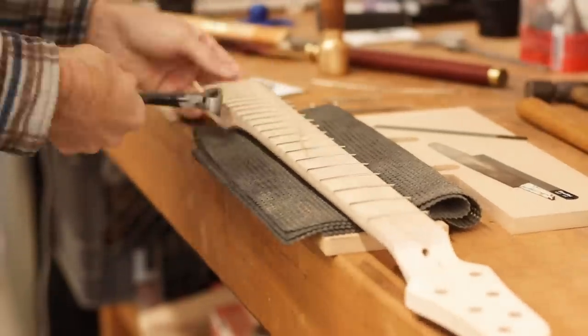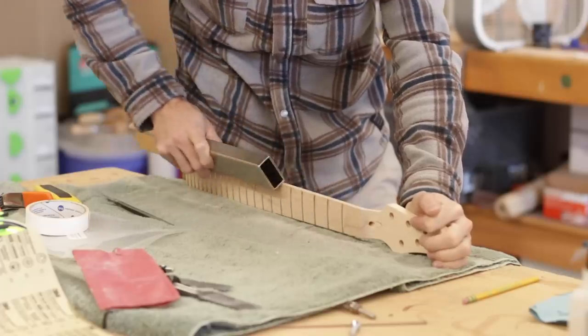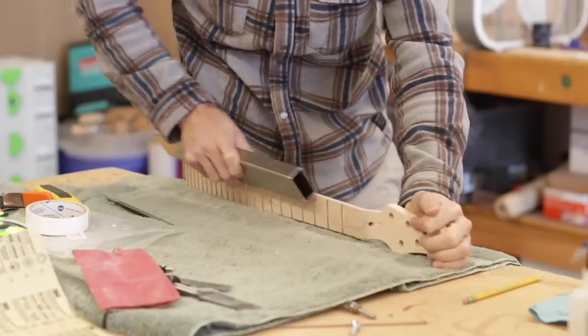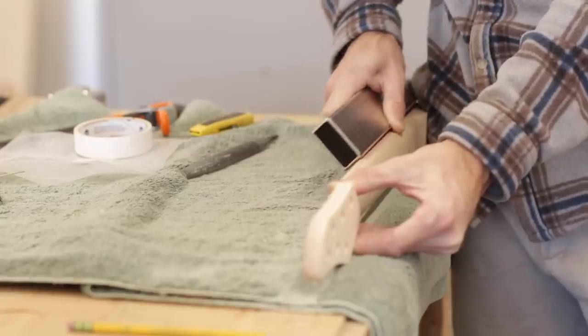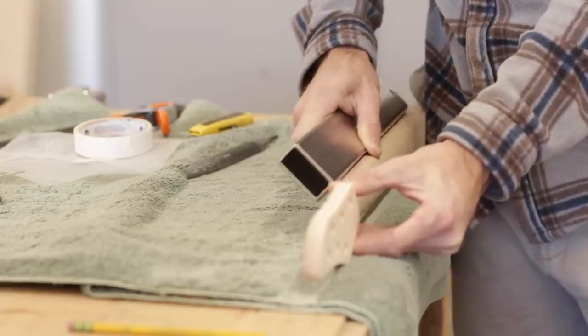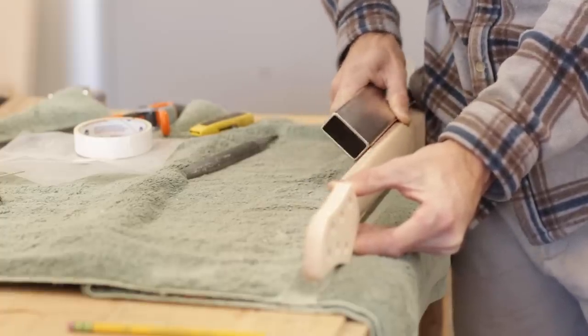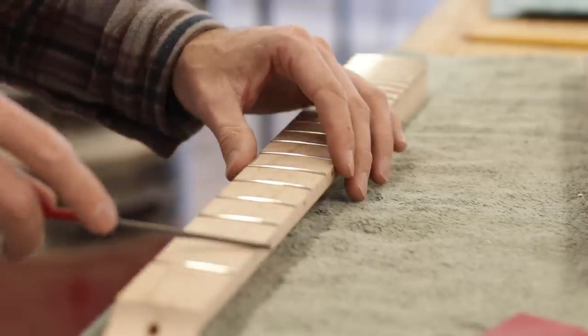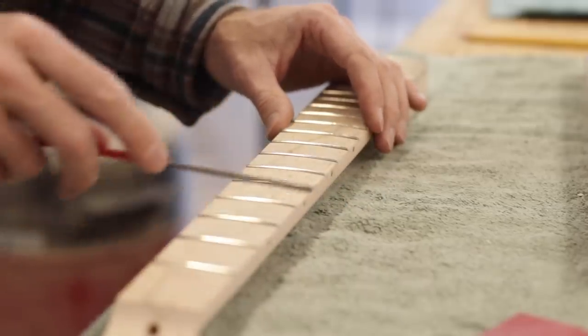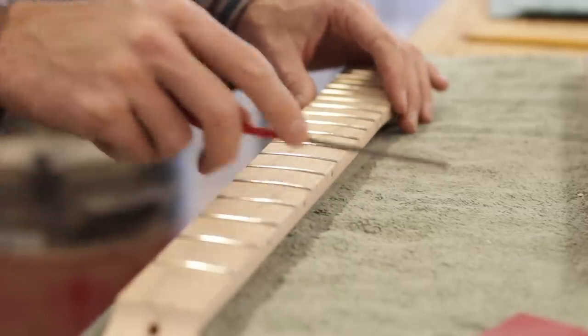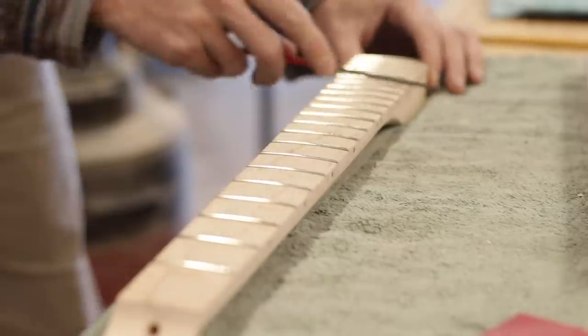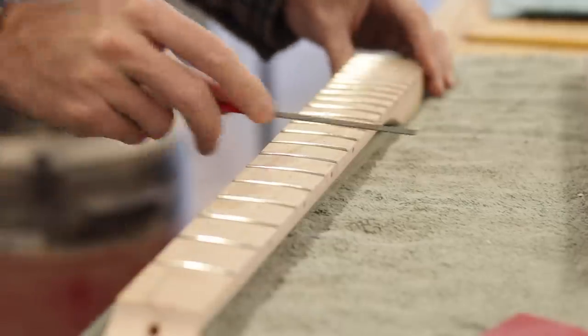From here, it's all just fine-tuning the frets, so I started by chamfering the ends and rounding them over. They make fret end files that are angled to get this chamfer just right, but I just used my leveling beam and held it at an angle that I thought looked good. Each fret then needs to have its end rounded over, and all of this is just so that there aren't any sharp edges against your hand while playing.